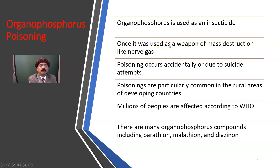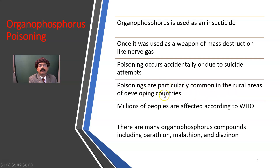It was once used as a weapon of mass destruction, like nerve agents during World War. Poisoning occurs accidentally or due to suicide attempts and is particularly common in rural areas of developing countries, where organophosphate insecticides are more widely used than in urban areas. Millions of people are affected worldwide according to the World Health Organization.